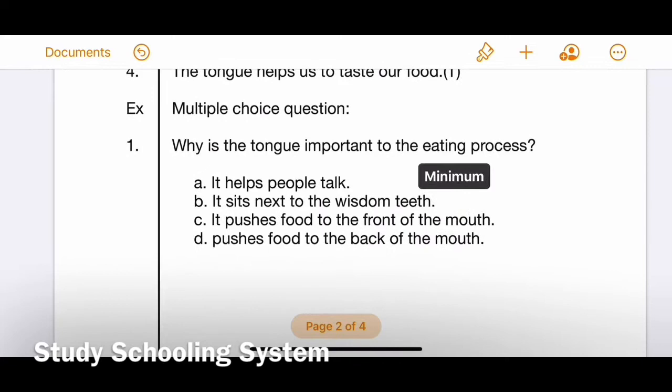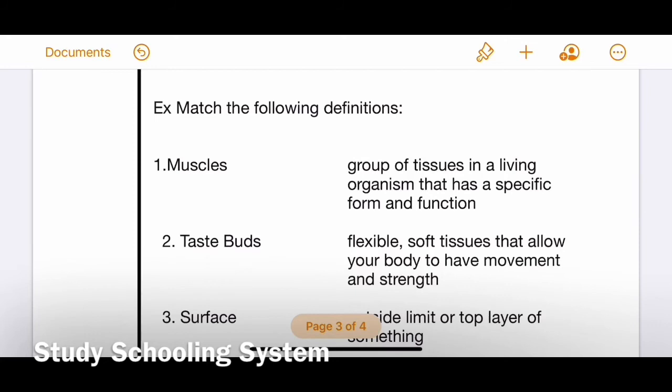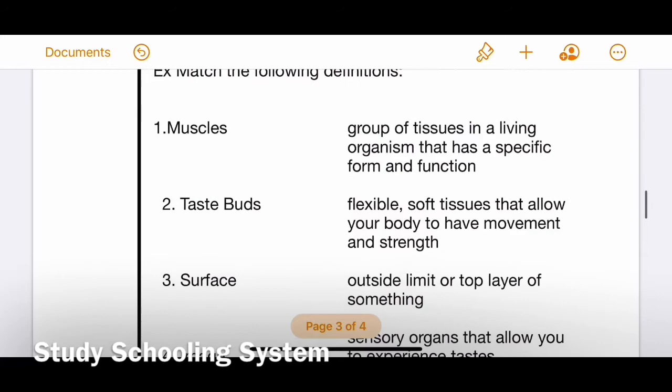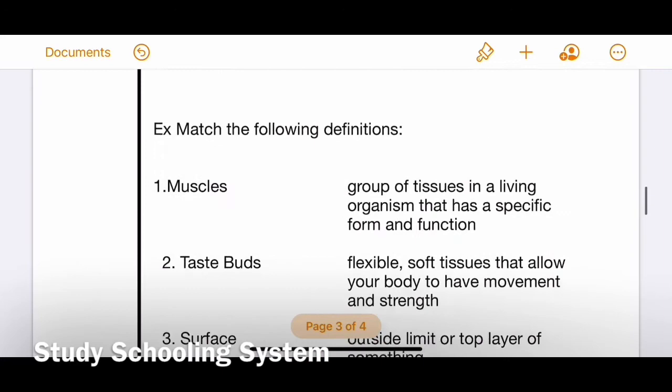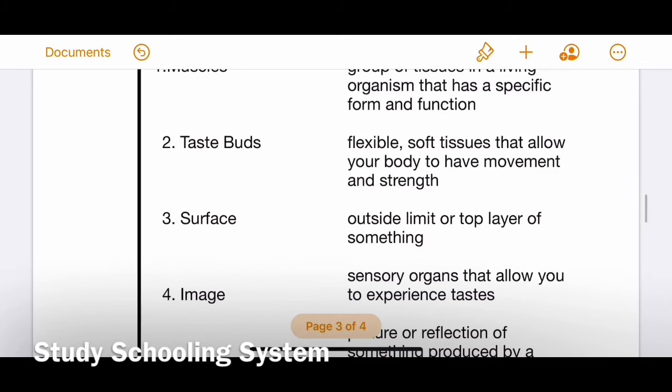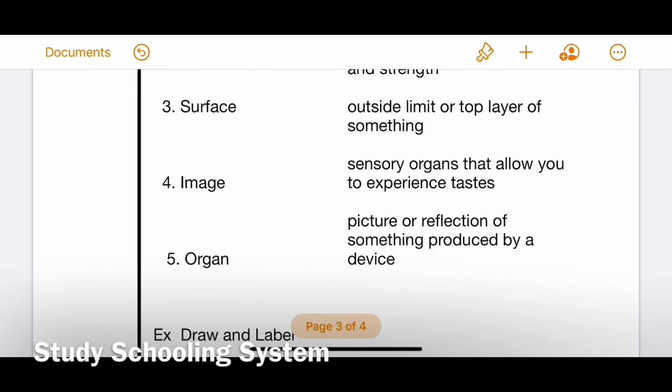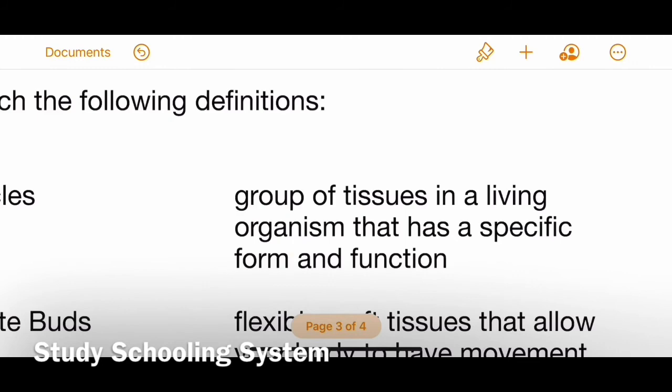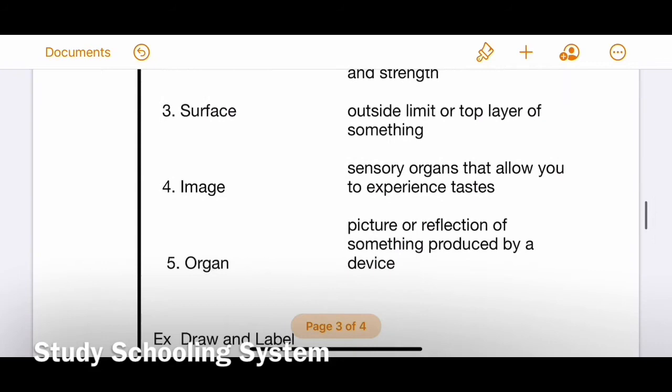Let's move on to our next exercise, which is match the following definitions. This time I've given definitions to match. You have five words on the left and definitions on the right, and you will draw a line and match them. Number one: muscles, two: taste buds, three: surface, four: image, five: organ. The first definition is 'group of tissues in a living organism that has a specific form and function.' This is organ, so you will draw a line from organ to this one.